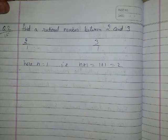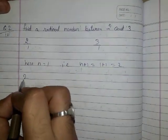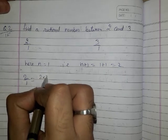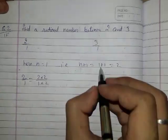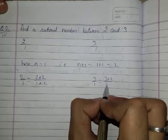So we will multiply both the numerator and denominator of the given rational numbers with 2. So your first rational number will become 2 upon 1 equals 2 into 2 upon 1 into 2. And second rational number will become 3 upon 1 equals 3 into 2 upon 1 into 2.